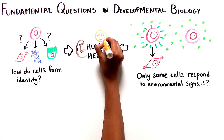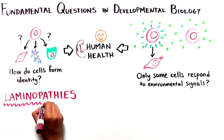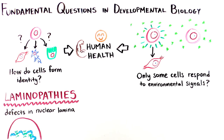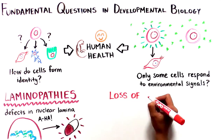Answers to these questions can lead to many important advances for human health. For instance, there is a large group of diseases known as laminopathies that are caused by defects in the nuclear lamina. Understanding what role the nuclear lamina plays in gene regulation can put researchers on the path towards better treatment for these diseases.